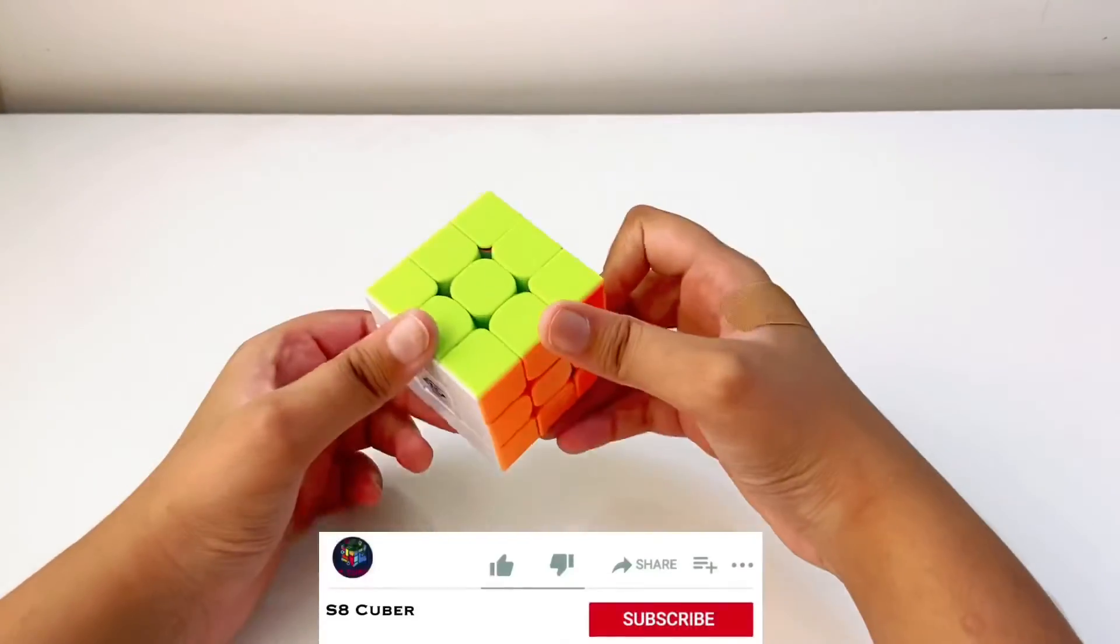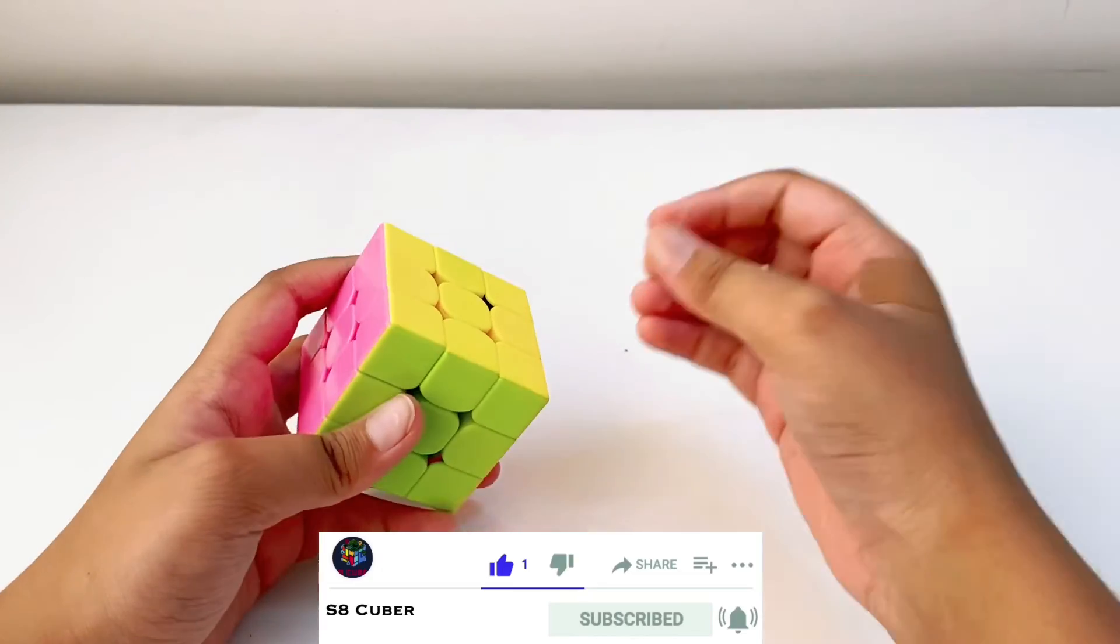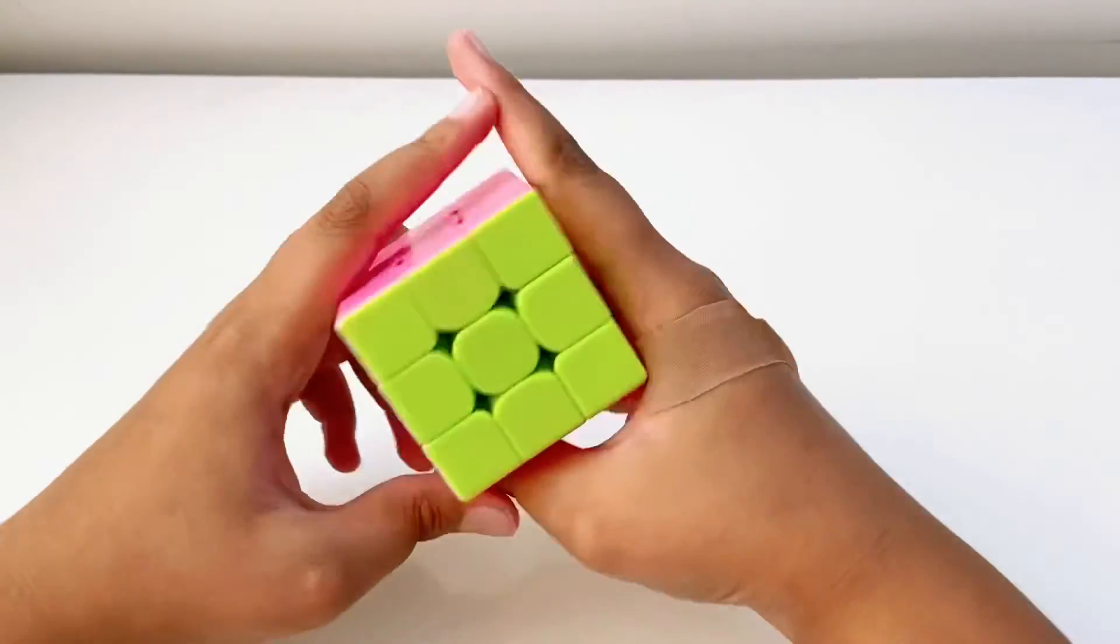If you guys want to see the other parities which I do in the three by three and the cubes above, like four by four, five by five, six by six, then tell me in the description and for now bye bye.